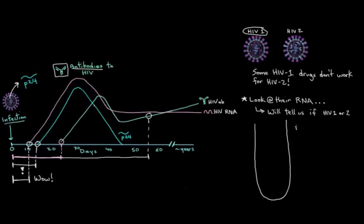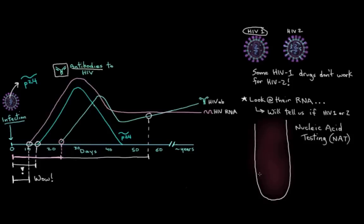We look for this RNA via nucleic acid testing, NAT, which is not the same as the ELISA or the Western blot that we saw before. This is a special kind of test that can find tiny amounts of HIV nucleic acid in our blood sample. Then when it finds them, it amplifies them. It makes lots of copies of them so we can detect that they're there.